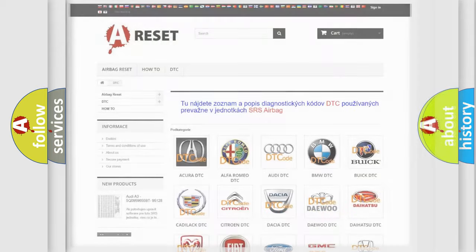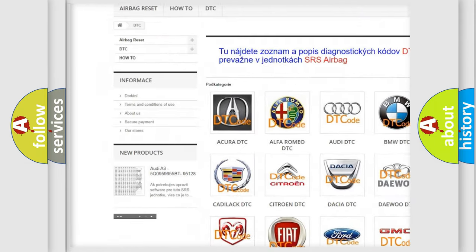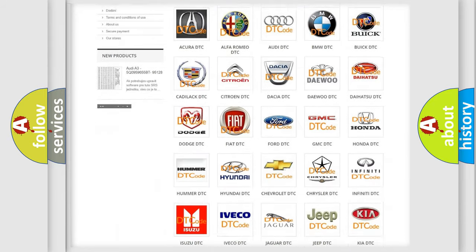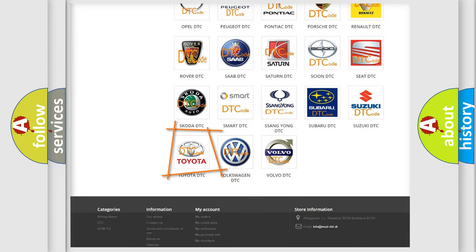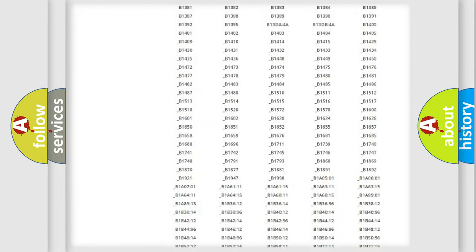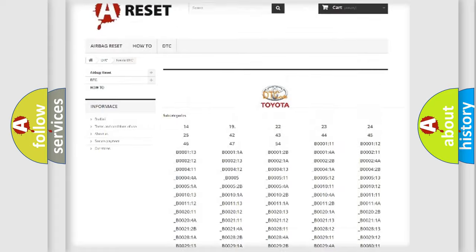Our website airbagreset.sk produces useful videos for you. You do not have to go through the OBD2 protocol anymore to know how to troubleshoot any car breakdown. You will find all the diagnostic codes that can be diagnosed in Toyota vehicles.